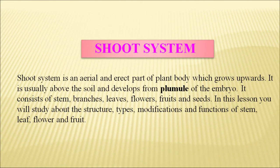Welcome to NIOS students. Today we shall be studying biology and we shall be focusing on the shoot system. The shoot system is the aerial and erect part of the plant body which grows upwards, and it is usually above the soil. It develops from the plumule part of the embryo.